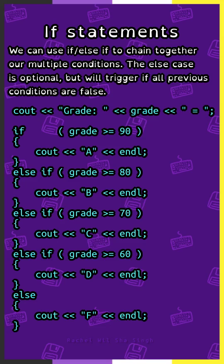As an example, we can use an if statement to say: if grade is greater than 90, output A. Else if grade is greater than or equal to 80, output B. Else if grade is greater than or equal to 70, output C. Else if grade is greater than or equal to 60, output D.